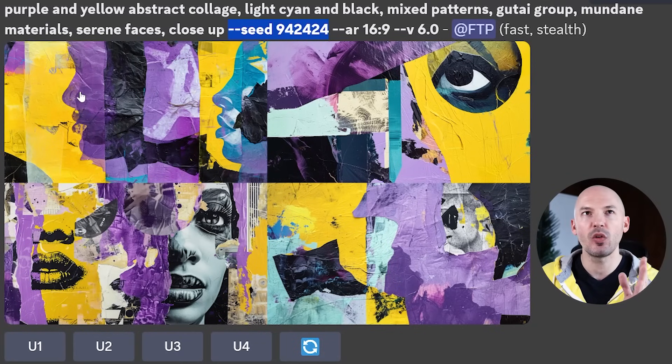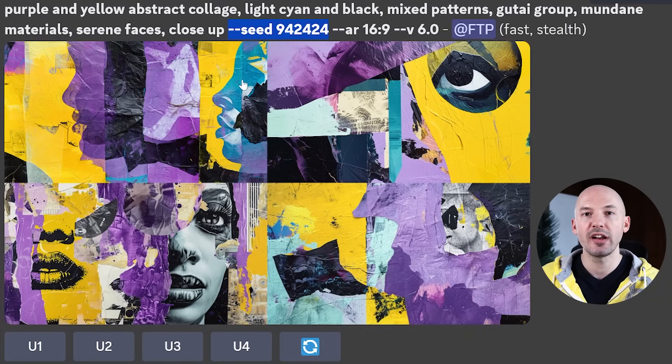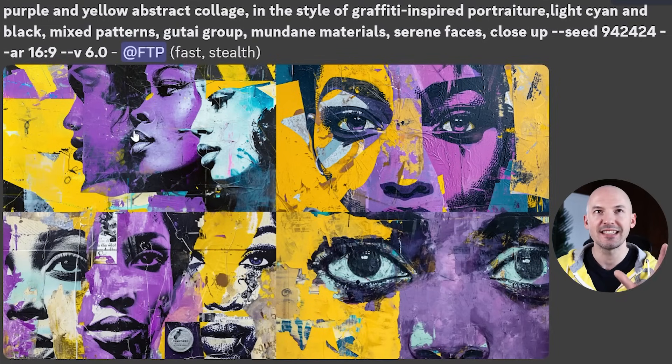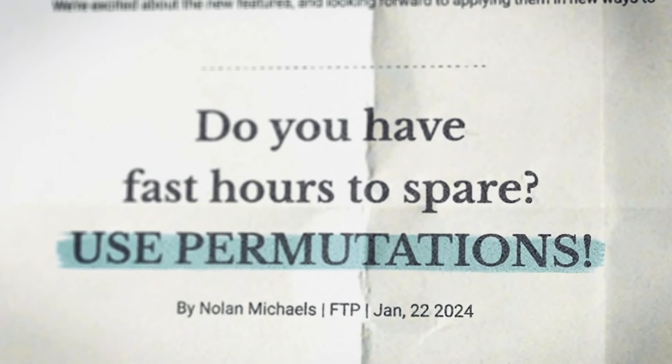This is a good example of what seeds actually do — they can keep a similar shape between prompts. In number one, there are silhouettes as we move through the colors, but with the portraiture phrase included, faces appear in that same color setup. Something like 'portraiture' really matters to the bot — it brings out facial features. That's what prompt engineering is really about in Midjourney: testing individual words while isolating a key variable, the seed number. If you have fast hours to spare, you can also write your prompts using permutations to test similar batches of words more quickly.